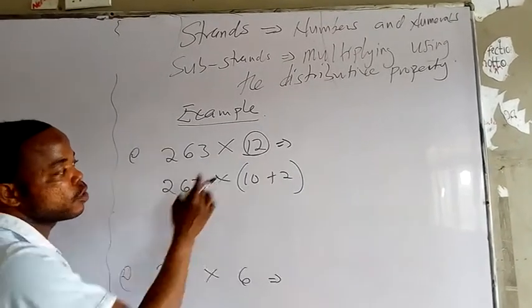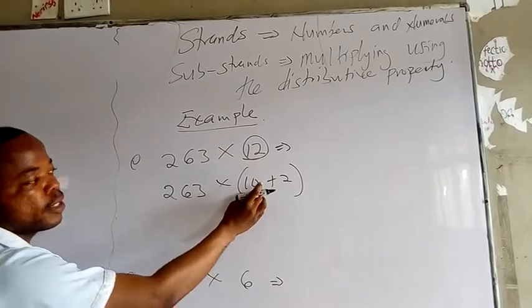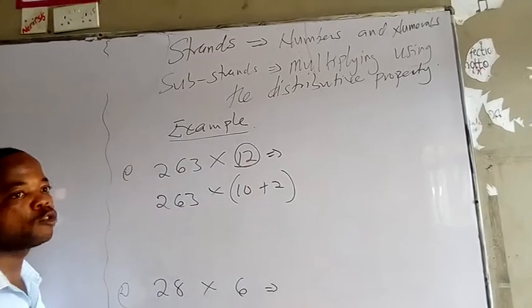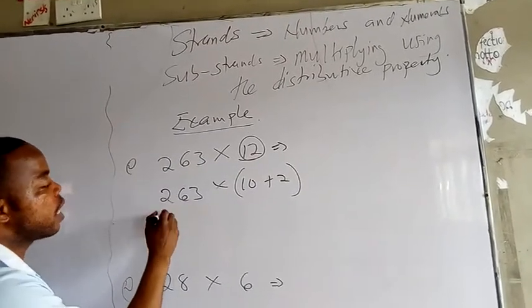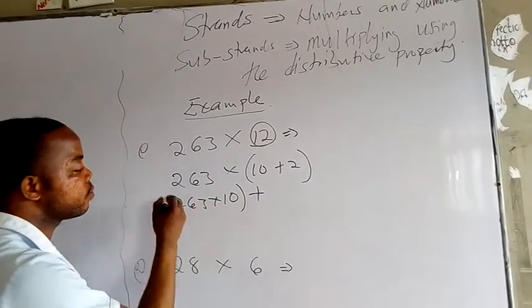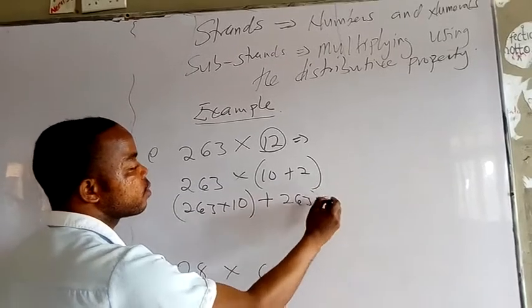As you can see, we have 10 plus 2 numbers of 12. Now you take this number, you multiply it against the 10, at the same time plus, then you multiply this against the 2. So we have 263 times 10, then plus 263 times 2.